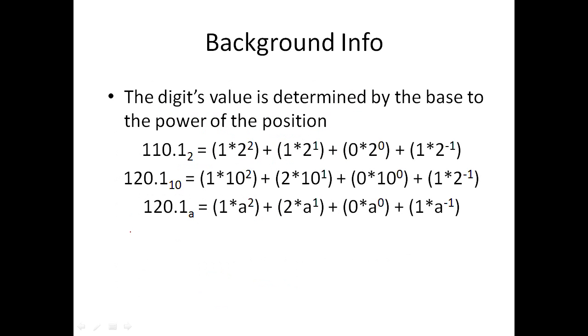To get the value of a number, you take the digit and multiply it by the base raised to the position of that digit. For instance, the rightmost position is position 0. So you do base 2 to the zeroth power, which gives you 1. The next digit is 1 times base 2 to the first power. Here's another example for base 10 and base 16.